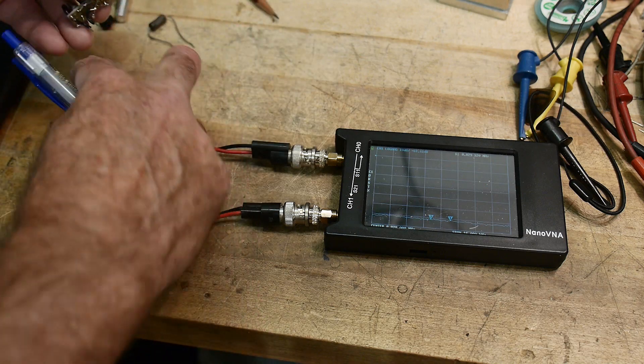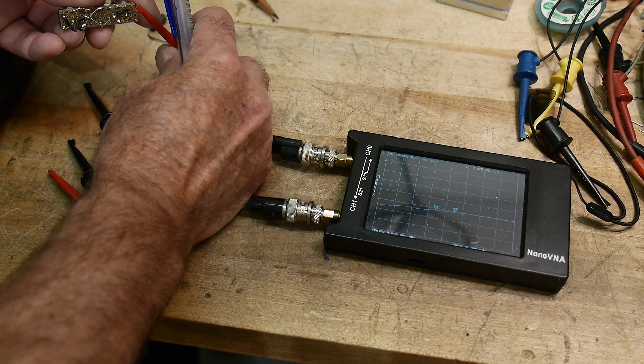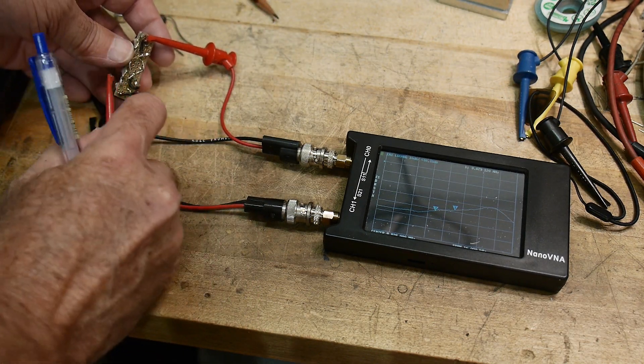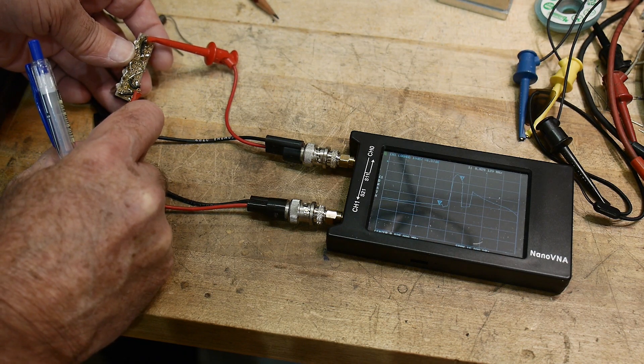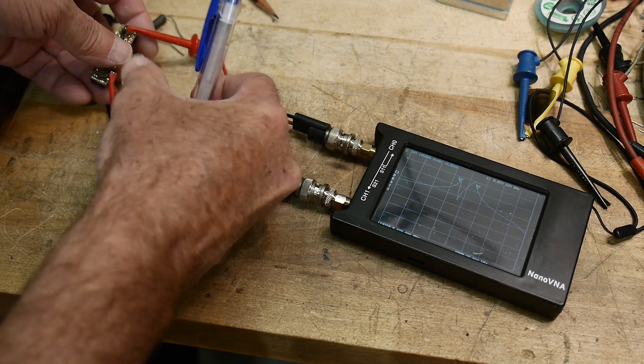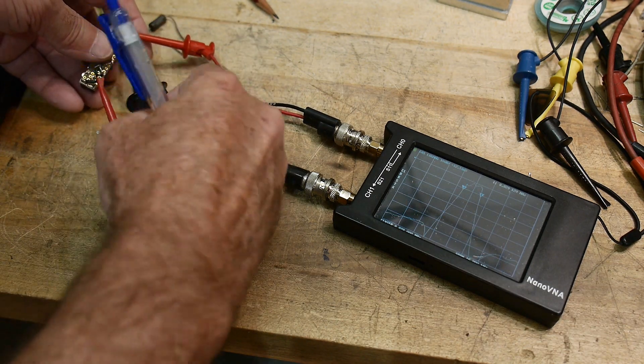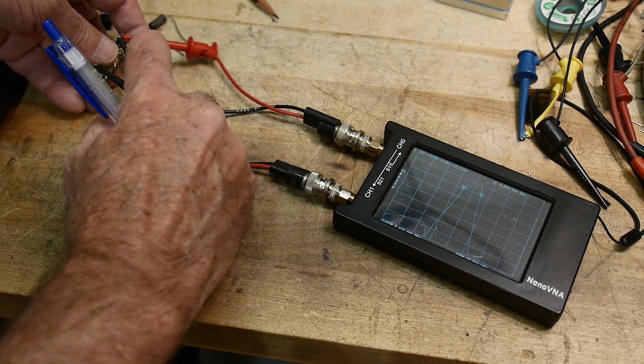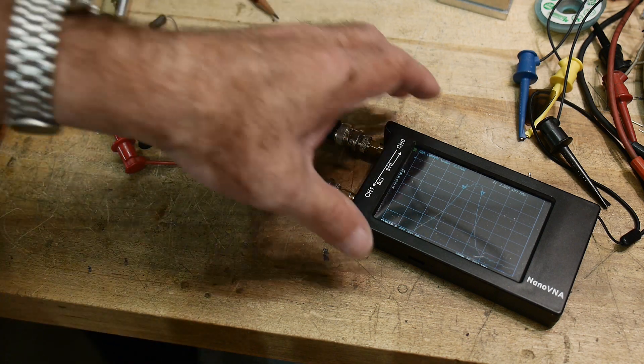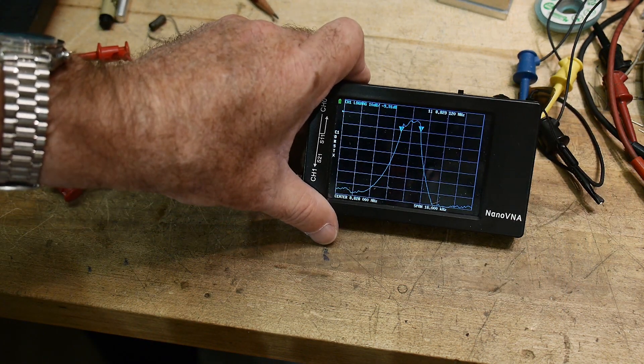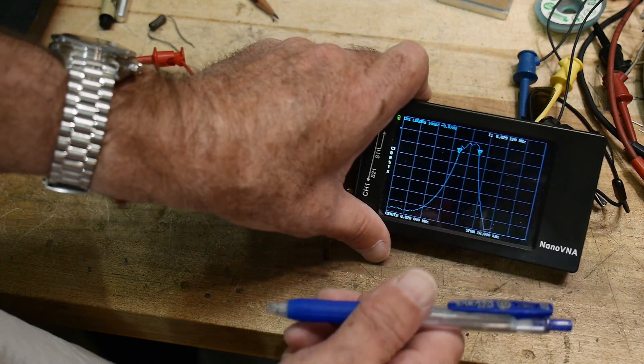So now we're going to take our crystal filter. And I will connect input and output. And I will connect the grounds. And we shall see what we shall see. So there we go. We have the filter. So it's measuring great.